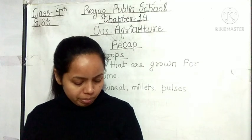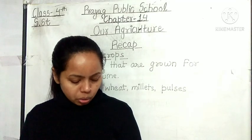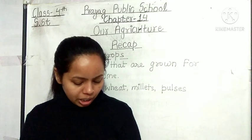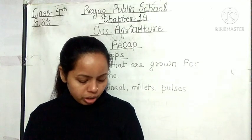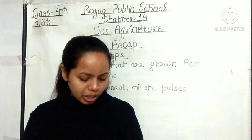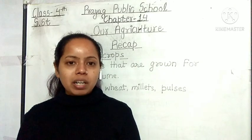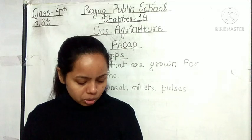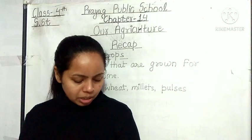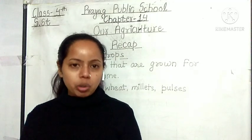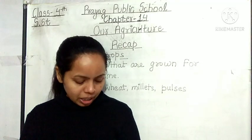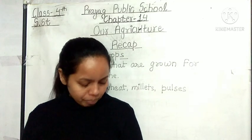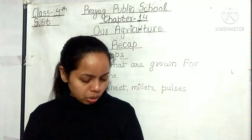The next crop is cotton. Cotton is grown in Punjab, Gujarat, Madhya Pradesh, Andhra Pradesh, Telangana, and Tamil Nadu. Cotton is used to make clothes. Cotton ya kapas Bharat ke in rajyon mein ugaya jata hai aur cotton ka use karke kapde banaye jate hain.